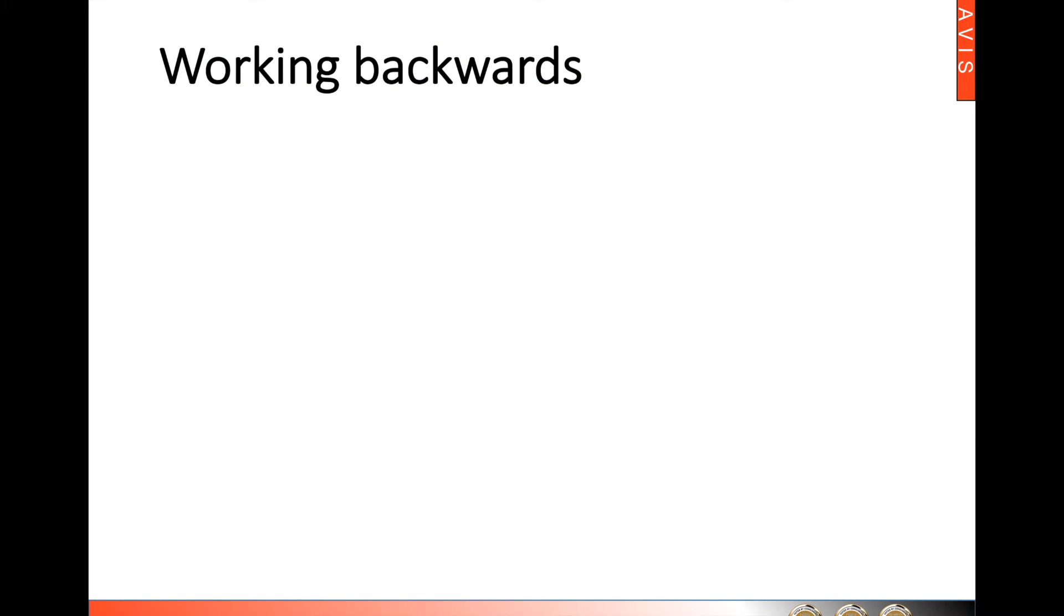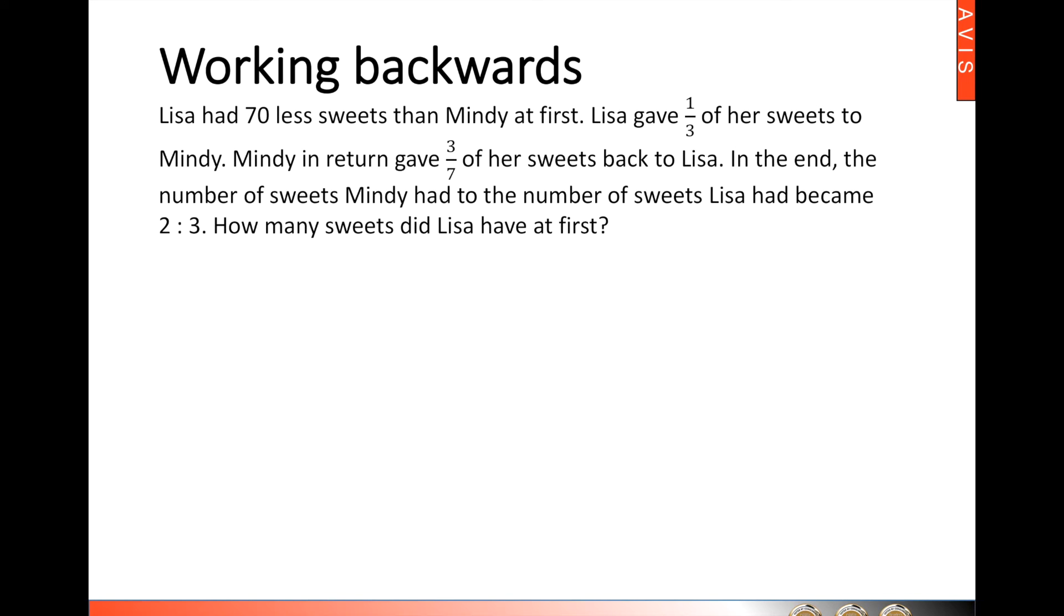Now, let's take a look at the working backwards question. We will start with the end ratio. We were told that in the end, the number of sweets that Mindy had to the number of sweets that Lisa had became 2 is to 3. So, that means Mindy will have 2 units and Lisa will have 3.